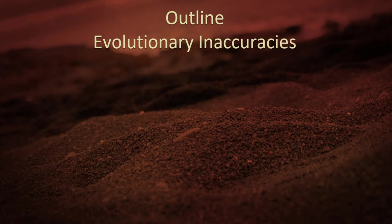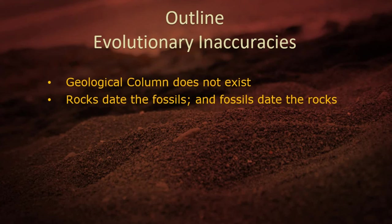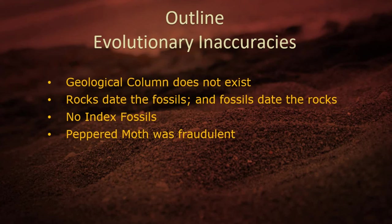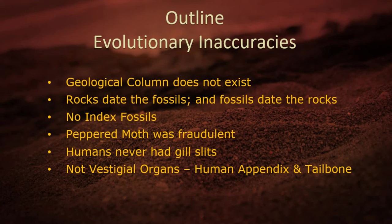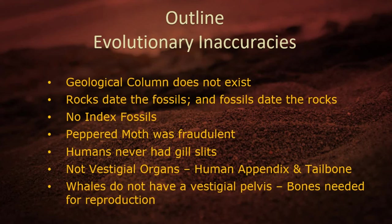Today's outline will cover eight inaccuracies. First, secular scientists believe the geological column exists — we'll show it doesn't. They also say rocks date fossils, then fossils date rocks — circular reasoning. They say there are index fossils; we'll show there aren't. The peppered moth story was fraudulent for decades. Humans having gill slits — we'll address that. Vestigial organs: the appendix and human tailbone are actually needed. And whales' so-called vestigial pelvis actually contains bones needed for reproduction.